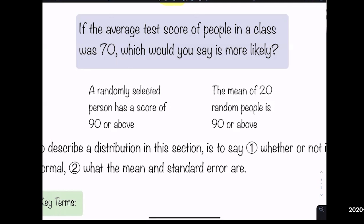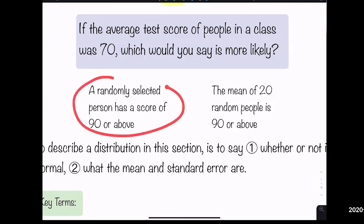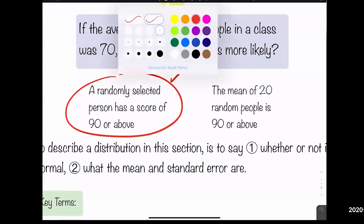As the sample size increases, you have more accurate data. If you sample the whole class, the dispersion goes to zero because the sample mean equals the population mean exactly — zero standard deviation, zero error. So a random individual is more likely to score 90 or above than the mean of 20 people being 90 or above.